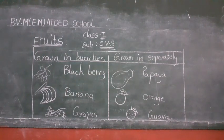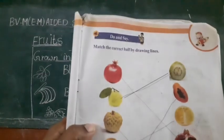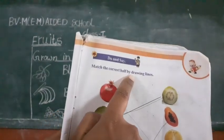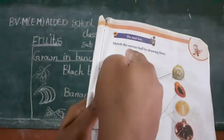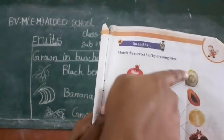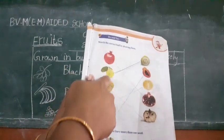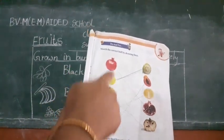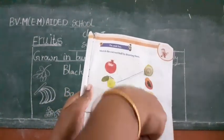We will start another topic. See children, here is one exercise. Match the correct half by drawing lines. So, these are all full fruits. These are all cut fruits. This is a full picture of fruits.